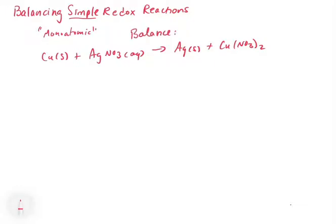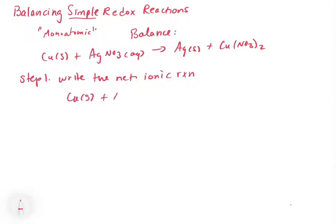There are a couple of steps that you're going to follow to help you out with balancing, and if you follow these steps, generally speaking, this is going to get you right through to the answer in a very efficient way. So step one, as always, is write the net ionic. The reason why we do this is to get rid of the spectator ions so that we're not spending a lot of time computing oxidation numbers for things we don't need to. In this case, the spectator ion is going to be the nitrate, so we can eliminate that. We can write this as: Cu(s) + Ag⁺(aq) → Ag(s) + Cu²⁺(aq).